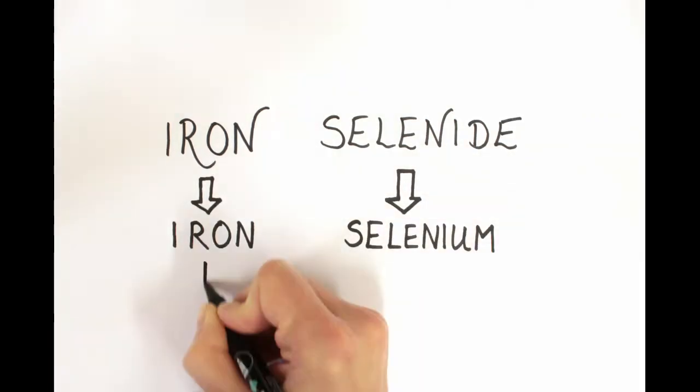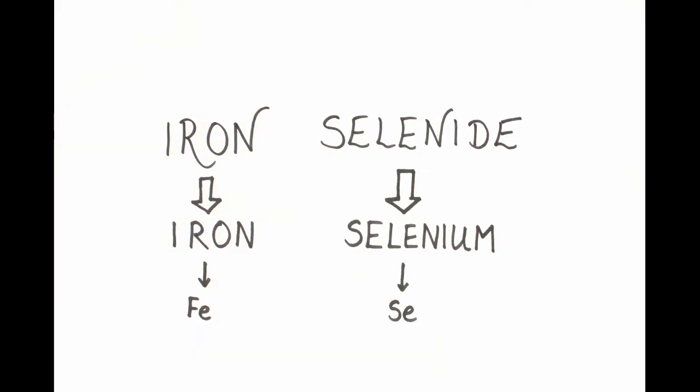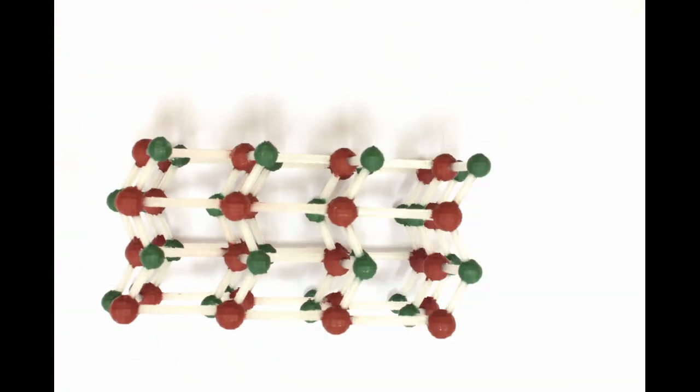Iron selenide is made of two different elements, two different types of stuff. Those are iron and selenium. In this model, the iron is brown and the selenium is green. Each little ball represents an atom. An iron atom is the smallest amount of iron you could possibly have.